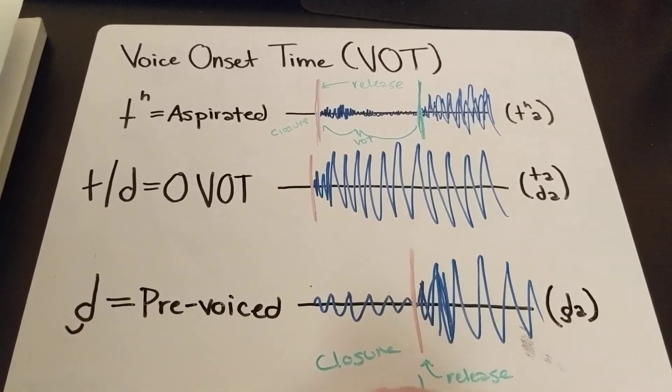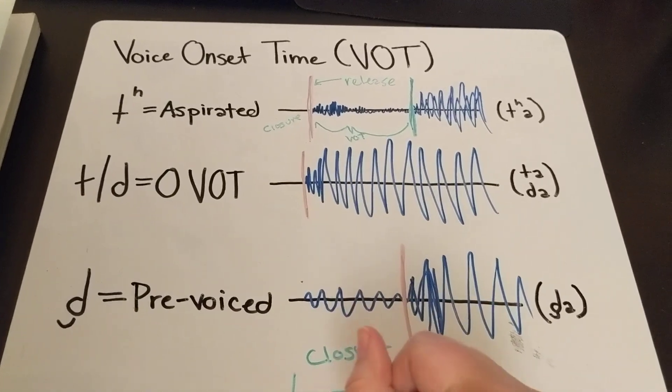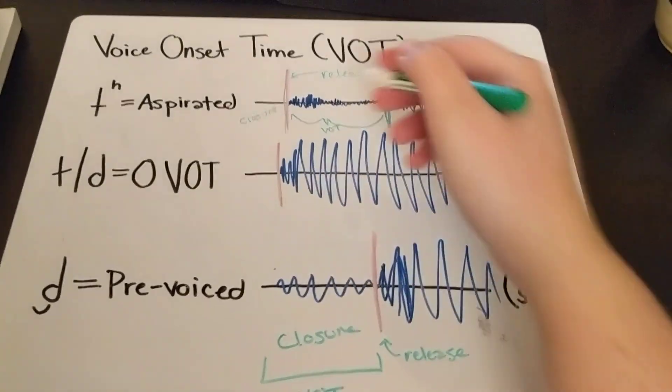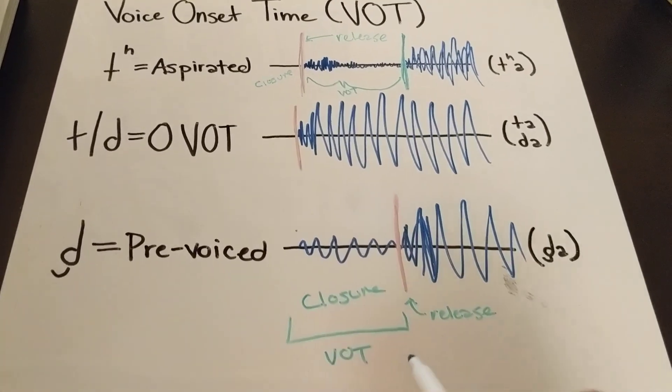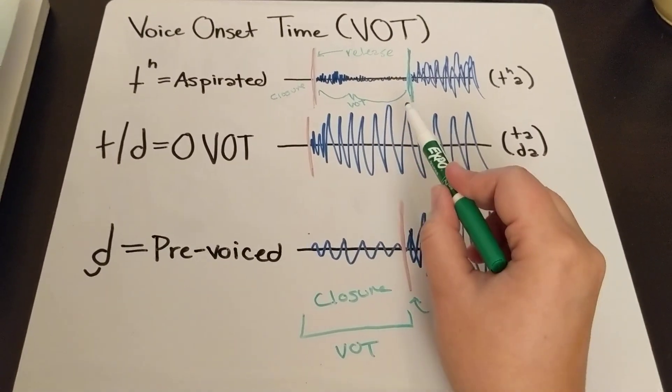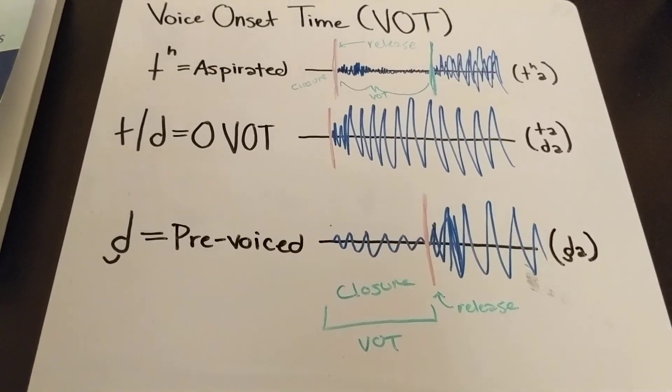So this is your voice onset time here. So see how here it's on the right side of the release, and here it's on the left side of the release? That's why this one's a positive, and this one is a negative voice onset time.